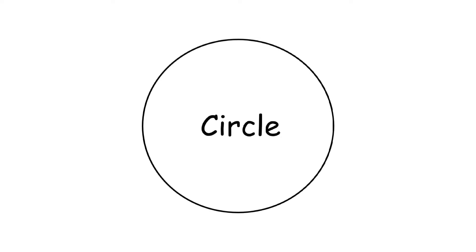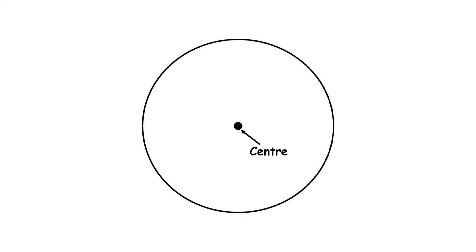Here we have a circle. You can see there is a point in this figure. This point is called the center of the circle, and it is also known as the fixed point of the circle.